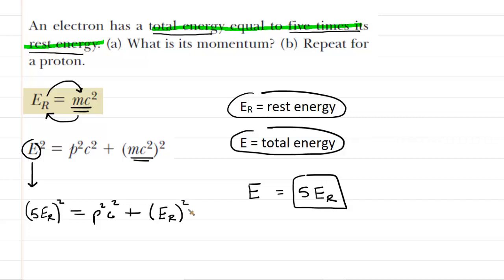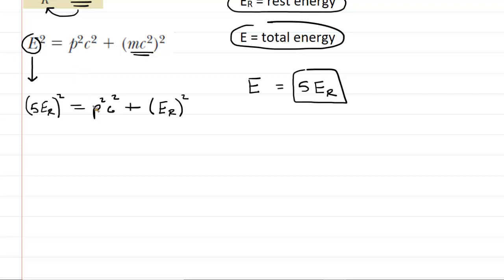Our goal is to find the momentum. So we actually want to solve this equation for p. And to do that, we may wish to square out the left side. So that's going to give us 25 E sub R squared. On the other side of the equation, we're going to square the other E sub R and that gives us E sub R squared.